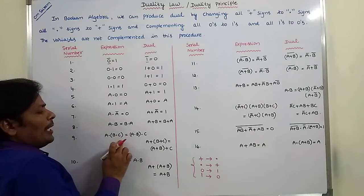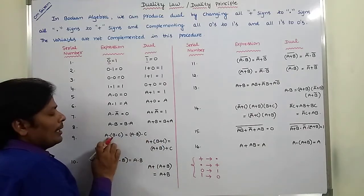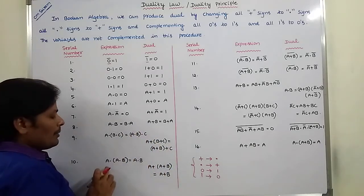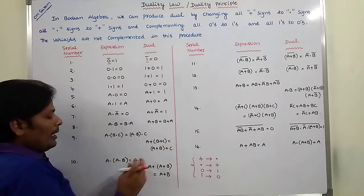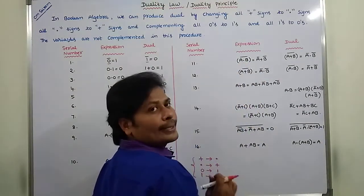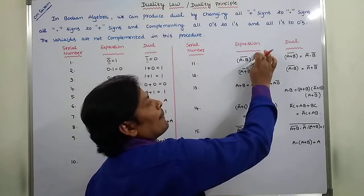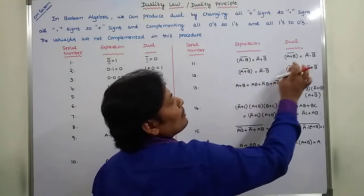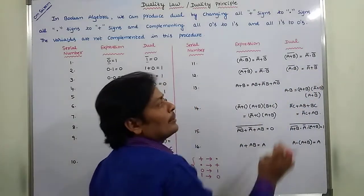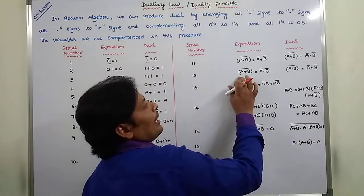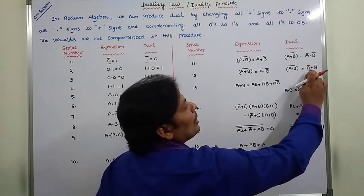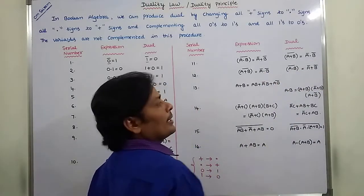A AND B AND C equals A AND (B AND C); only the AND signs change to plus signs, giving A plus B plus C equals A plus (B plus C). Next, A AND (A AND B) equals AB; only AND sign changes to plus — A plus (A plus B) equals A plus B. Next, (AB)' equals Ā; changing AND to plus: (A plus B)' equals Ā plus sign changes to AND, giving Ā AND B̄. Similarly, (A plus B)' equals Ā; here plus changes to AND — (AB)' equals Ā, AND changes to plus — Ā plus B̄.